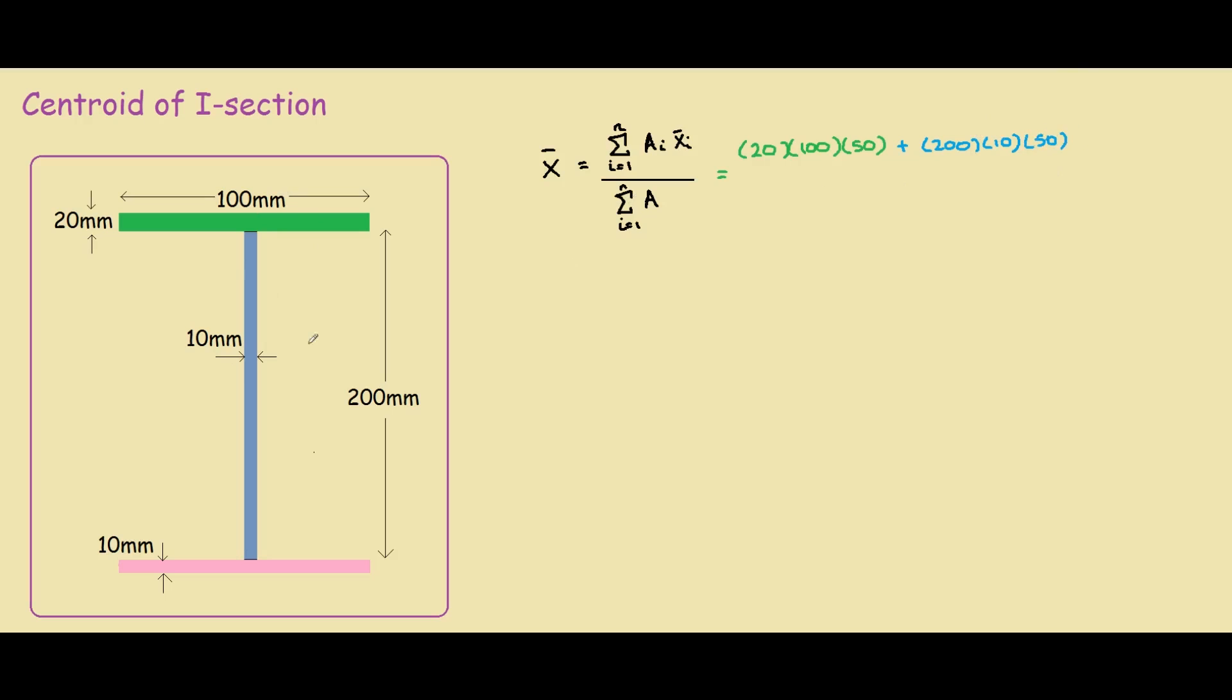Let me explain why this is 50. We should have actually started off with a reference point, say here. So the centroid from this reference point to the middle of the blue part is 50.